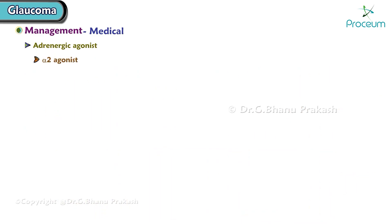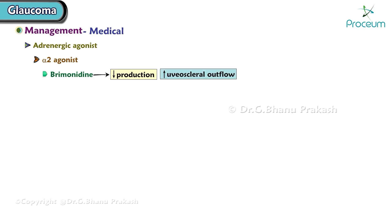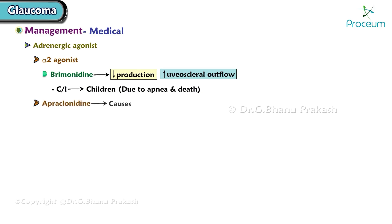Alpha-2 agonist drugs include brimonidine, which acts by decreasing production as well as increasing uveoscleral outflow. This drug is contraindicated in children due to apnea and death. Apraclonidine is known to cause tachyphylaxis and blepharoconjunctivitis.